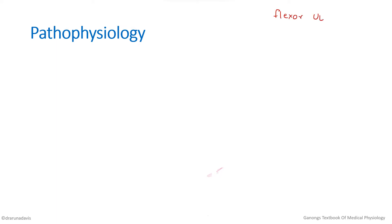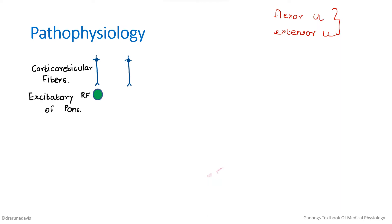Before moving on to pathophysiology, we should know the normal physiology of posture. Posture is maintained mainly by our anti-gravity muscles — the flexors of the upper limb and the extensors of the lower limb. Normally, from the cortex we have cortico-reticular fibers which act on two different areas of the reticular formation: the excitatory reticular formation of the pons and the inhibitory reticular formation of the medulla.